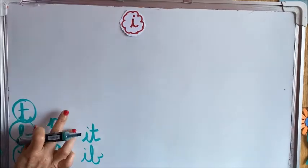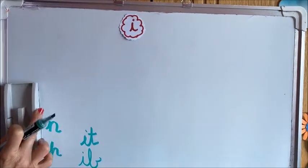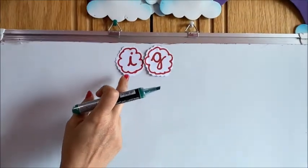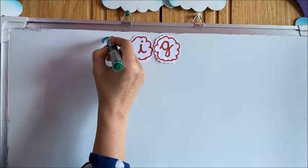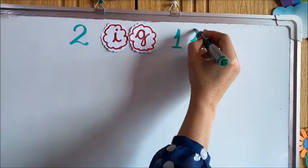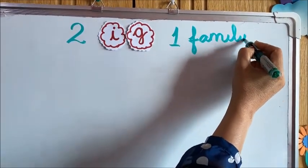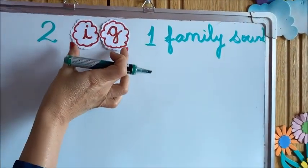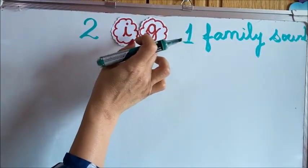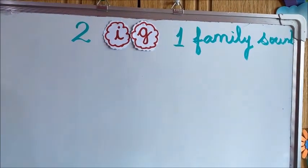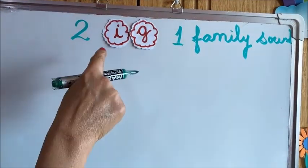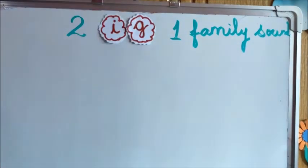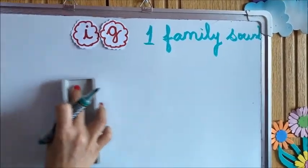So today this I is going to make a family with the letter G. Here is the letter G. These I and G are two-letter words with one sound — that is the family sound. Family sound means two letters that give one sound. What is the family sound of I and G? That is IG. Everybody say IG. IG is a two-letter word with one family sound.